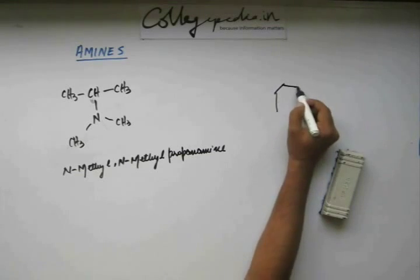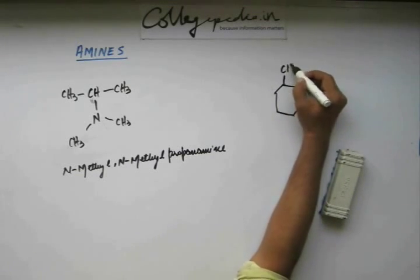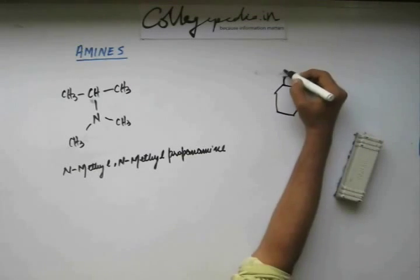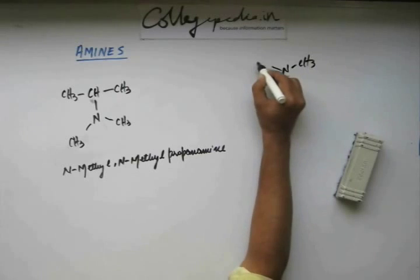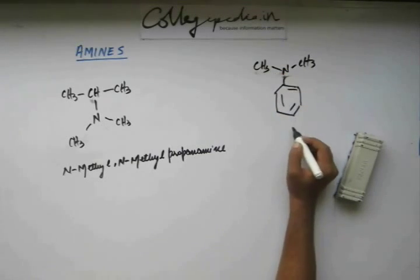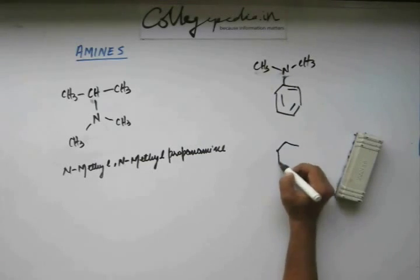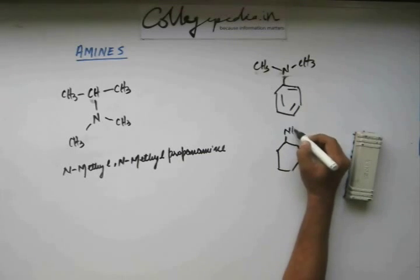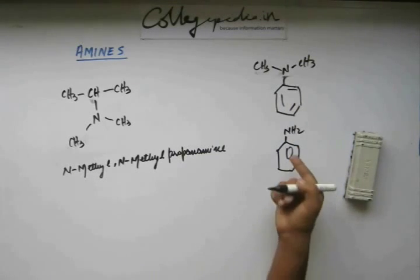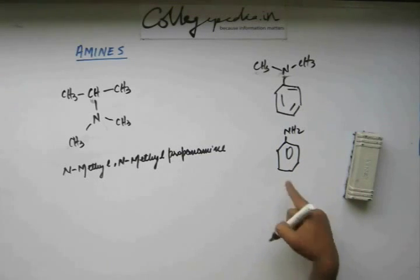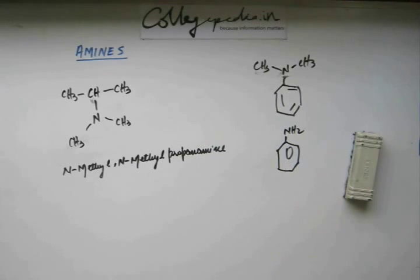If you have a compound like this, now this is named as N-methyl, N-methyl, aniline, because aniline you are very much familiar with. This is aniline. And when you are replacing a hydrogen in a basic structure of amine by R-groups, those R-groups are named like this: N-methyl, N-methyl, whatever R-group is. If you have a methyl, N-ethyl, then it would be named as N-ethyl, N-methyl, aniline.